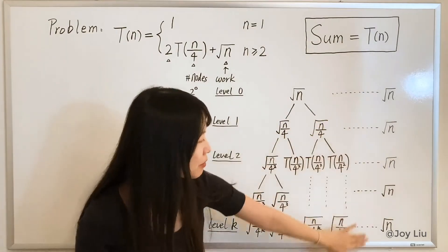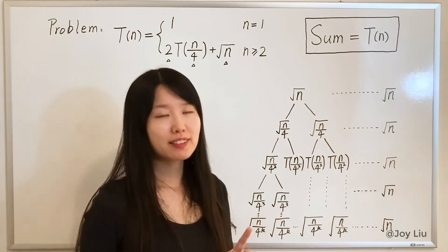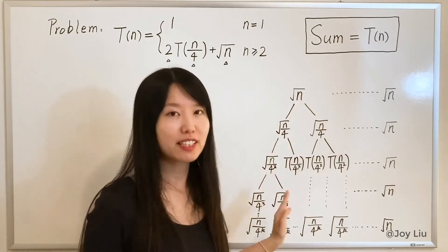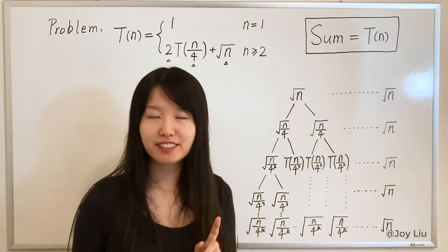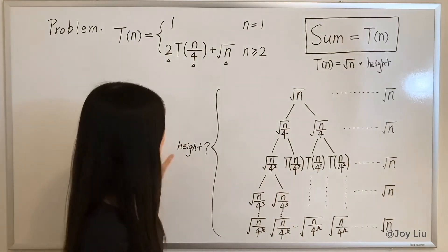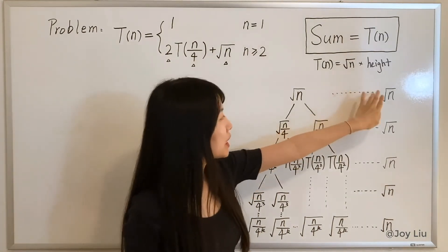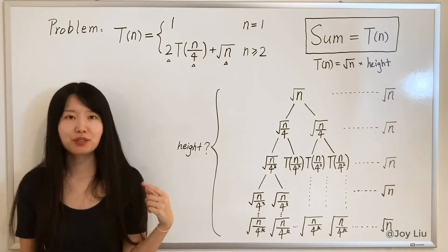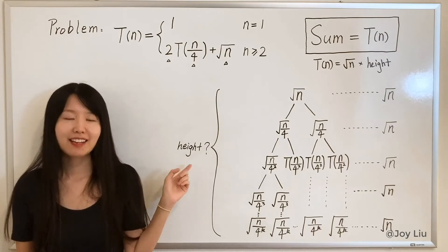Now we have the sum of each level, but we still need one more thing to calculate everything, that is the height. If we know the height, we can just multiply height with the square root of n to get T(n). So what is the height? I'll show you one way to get height formally and then I'll teach you a trick.